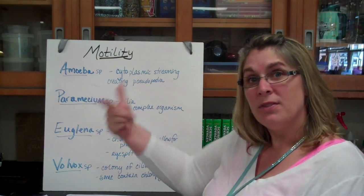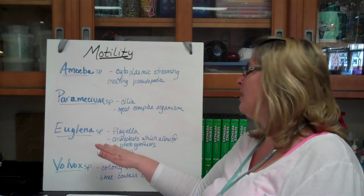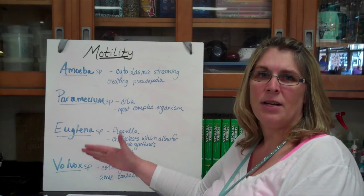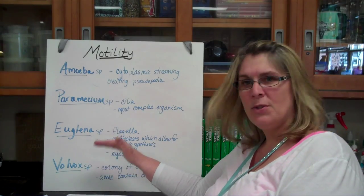Euglena. Euglena has a flagella which moves like a whip on the end. It also has the chloroplast that allows for photosynthesis I mentioned a minute ago. And it has an eye spot to help detect its environment. That's what's unique about Euglena.